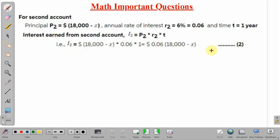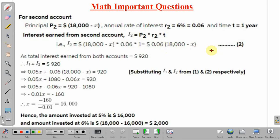Now, total interest earned from both the accounts is given as $920. So, adding equations 1 and 2 we can calculate the value of X. I1 is 0.05X plus I2 is 0.06 times (18,000 minus X) equals 920. Solving this we will get the value of X as $16,000.